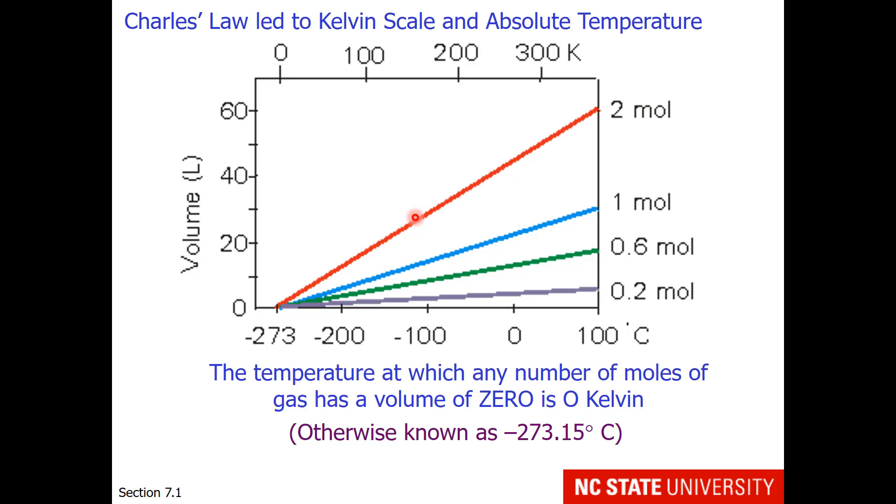All the lines intersected with one particular point. This point is the predicted temperature at which the volume of the gas is zero, and this intersection happens to occur at minus 273.15 degrees Celsius. So a new temperature scale was created in which this intersection was given the value of zero degrees kelvin.